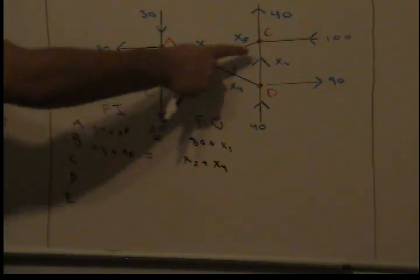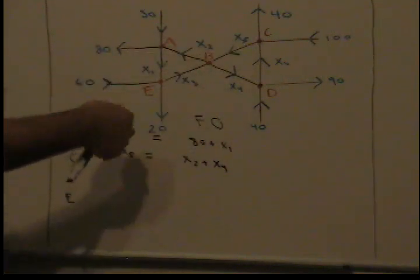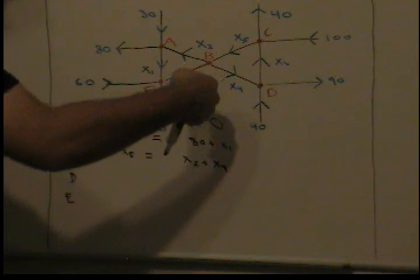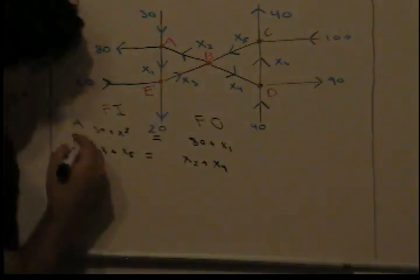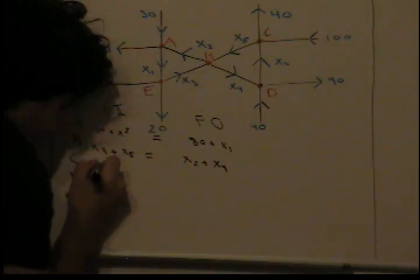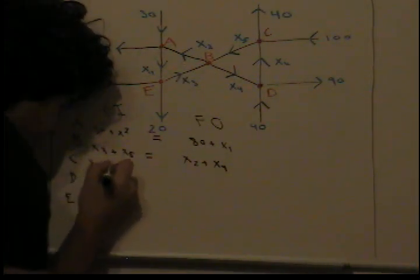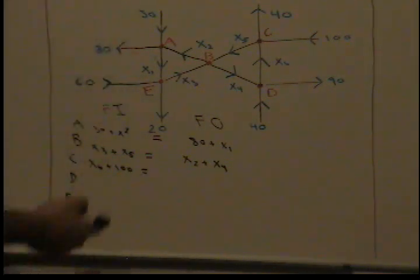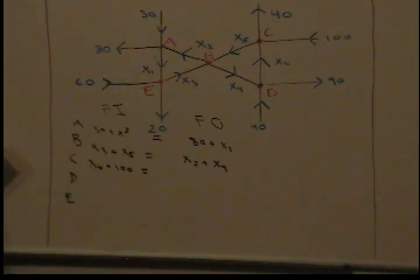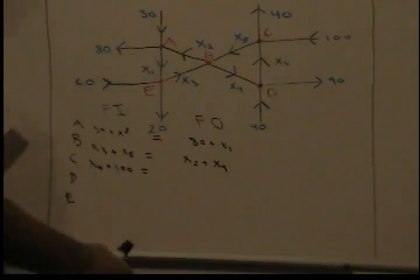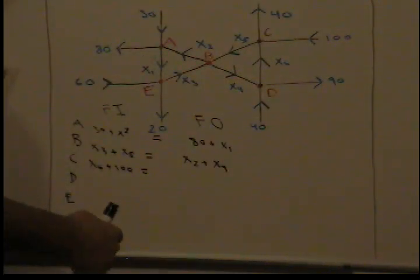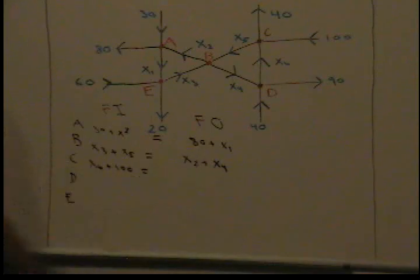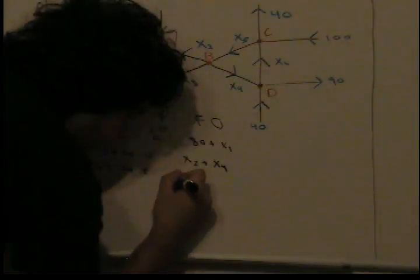Now node C. What flows into node C? x6 and 100 flow in, so we say x6 plus 100. What flows out of node C? 40 and x5 flow out, so we say 40 plus x5.